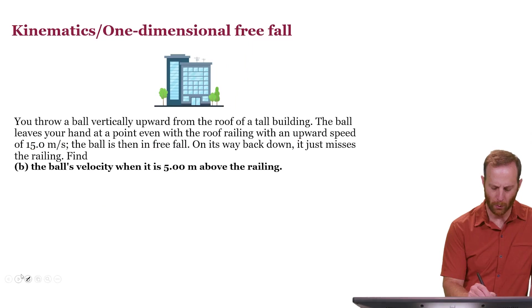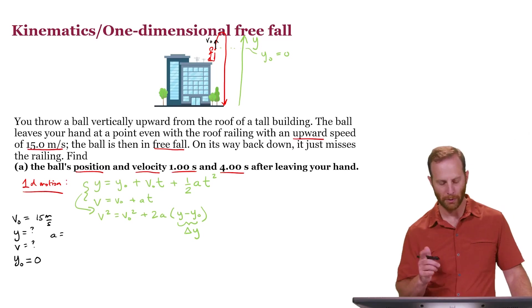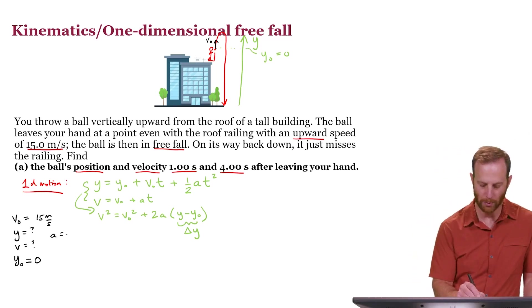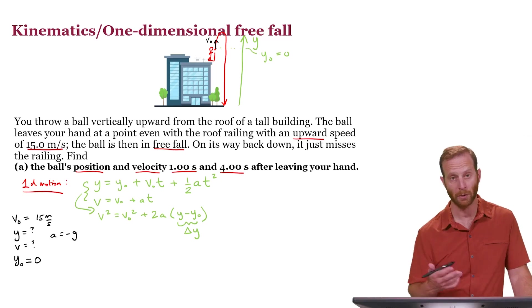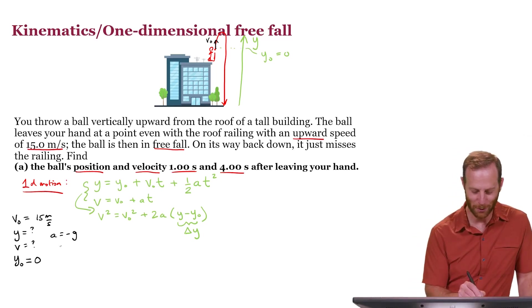And lastly, we'll need to indicate what the acceleration is. So because we're in freefall, that's where this value comes in, minus g, where g is the gravitational acceleration on whatever planet you are working on. And for a problem like this, we assume that we're on Earth. So this is minus 9.80 meters per second squared.